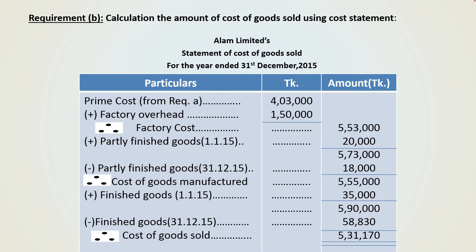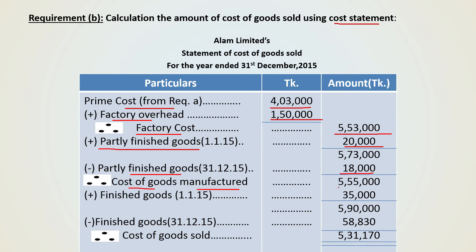Requirement B: calculate the amount of cost of goods sold using the cost statement. Prime cost from Requirement A: 4,03,000 taka, plus factory overhead 1,50,000 taka. So factory cost is 5,53,000 taka. Plus opening partly finished goods 20,000 taka, minus closing partly finished goods or work-in-process 18,000 taka. So cost of goods manufactured is 5,55,000 taka. Plus opening finished goods 35,000 taka — total 5,90,000 taka.